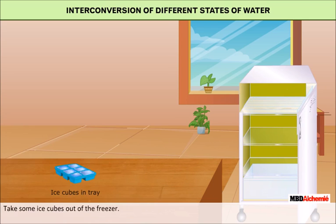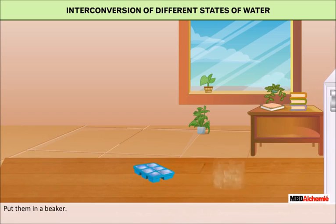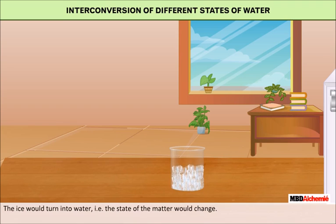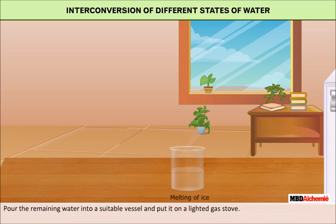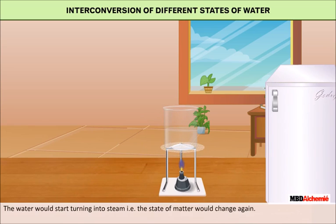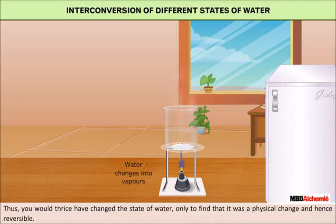Take some ice cubes out of the freezer and put them in a beaker. Leave the beaker for some time — the ice turns into water, meaning the state of matter changes. Pour the remaining water into a suitable vessel and put it on a lighted gas stove. The water starts turning into steam, changing state again. Thus you would have thrice changed the state of water, finding each time it is a physical change and hence reversible.